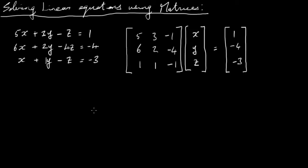I've written these three equations using matrices. These represent the coefficients of the x's, these the coefficients of the y's, and these the coefficients of the z's. We have our x, y, and z here, and these are our numbers on the right-hand side of the equations. So you can see: five times x, three times y, minus one times z gives one; six times x, two times y, minus four times z gives minus four, and so on.